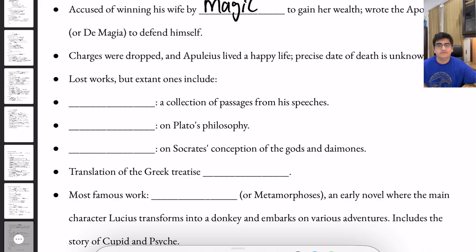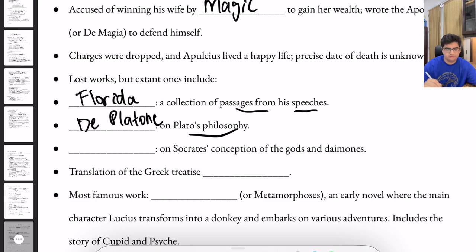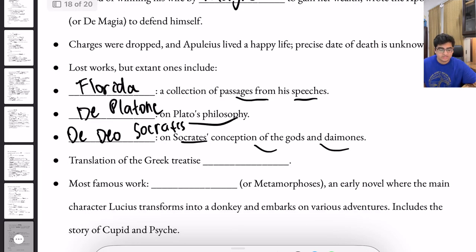Here are some of his lost works. His first lost work is the Florida, a collection of passages from his speeches. Then we have De Platone, on Plato's philosophy. Then we have De Deo Socrates, on Socrates' conception of the gods and daimones. Then we have a translation of the Greek treatise De Mundo.